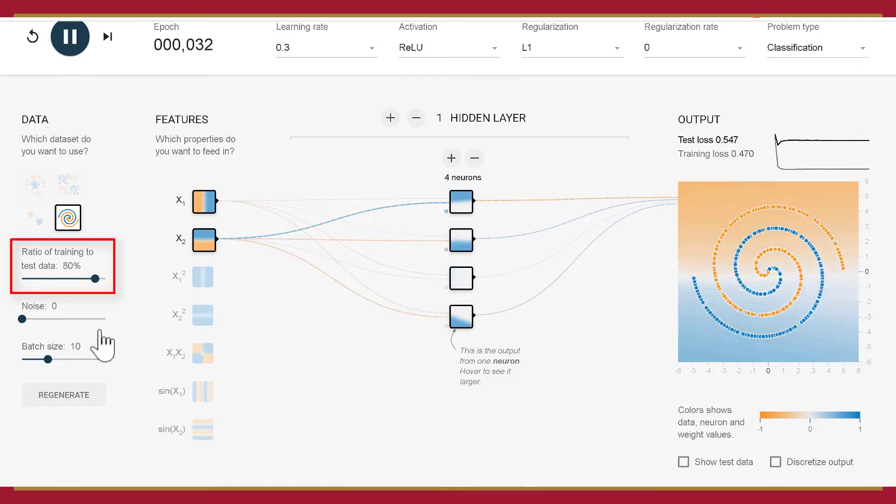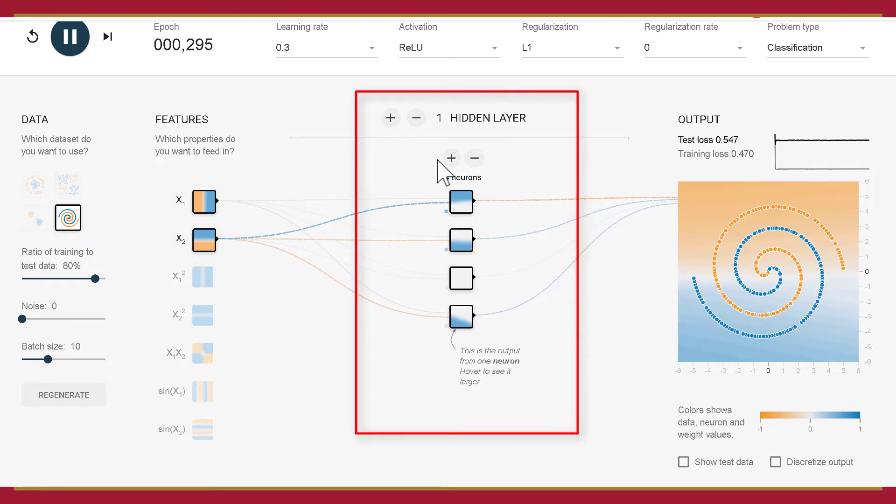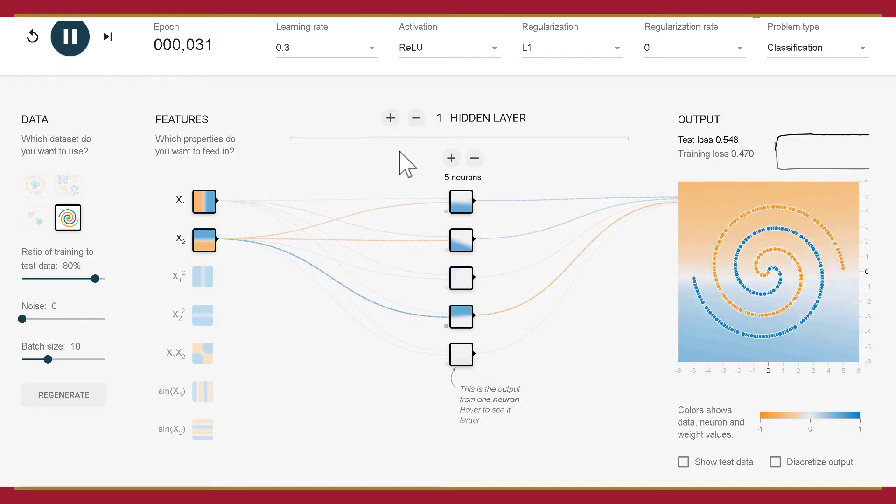I started by setting the ratio of training to test data to 80%. With just two features, X1 and X2, and one hidden layer with three and more neurons, I observed that the test loss and training loss were pretty high despite hyperparameter tuning.